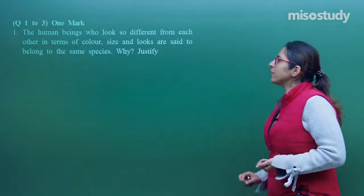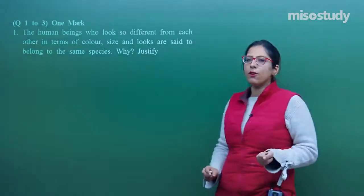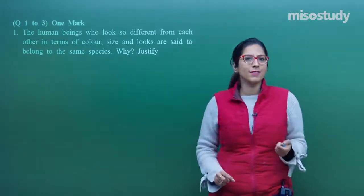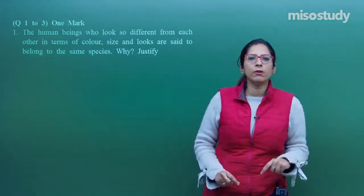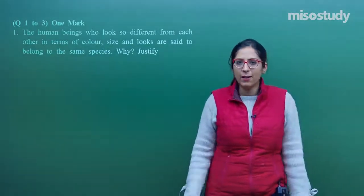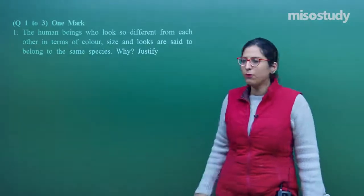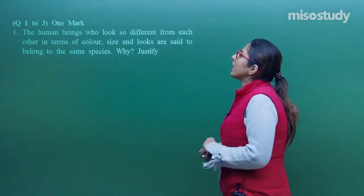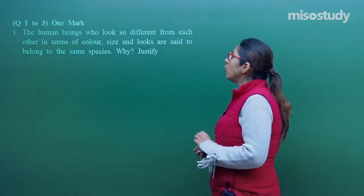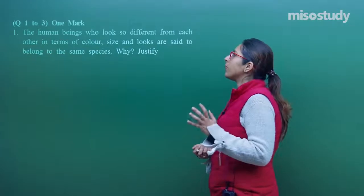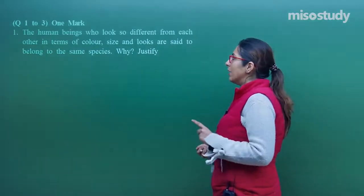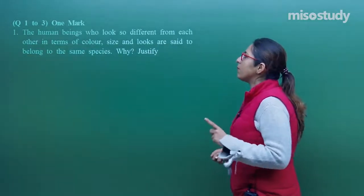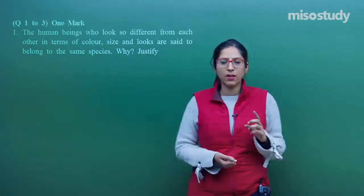The first three questions are of one mark. After that the questions are from two marks and three marks, and at the end we will be discussing a question from five marks. Let's start with question number one: Human beings who look so different from each other in terms of colour, size and looks are said to belong to the same species. Why? Justify.